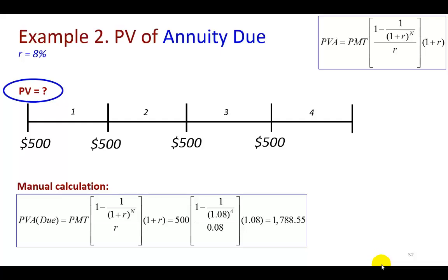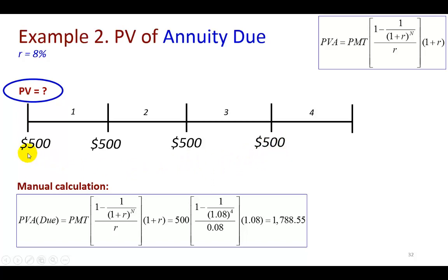Next is the case of annuity due, where cash flows occur at the beginning of each period — much like paying rent on an apartment. We can discount each cash flow individually: the first $500 occurs today and is not discounted, the second is discounted over one period, the third over two periods, and the fourth over three periods.